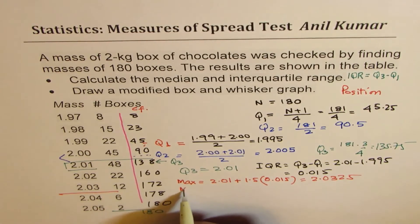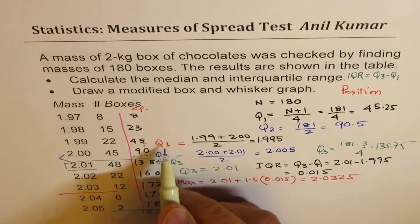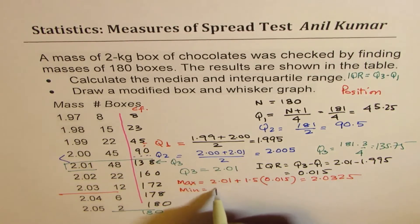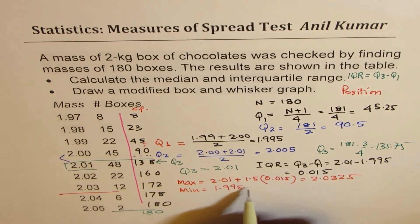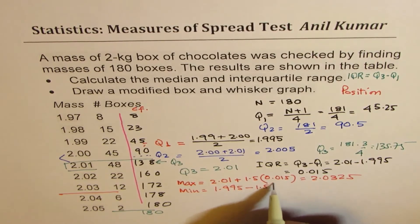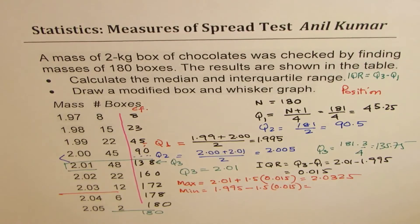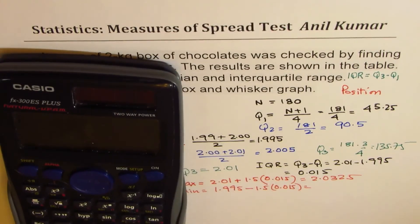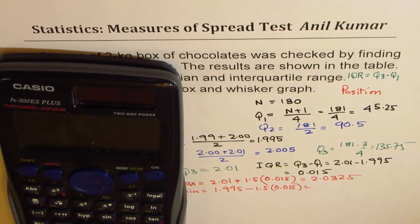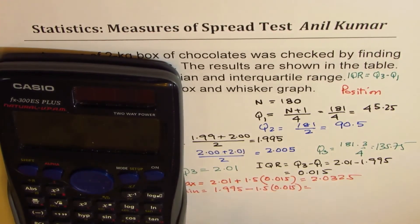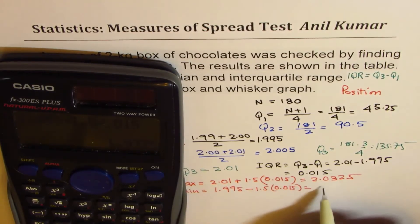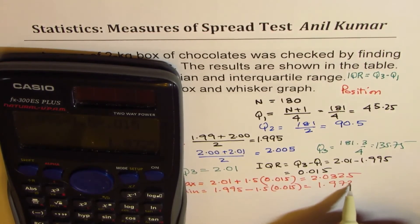So the minimum side will be Q1, which is 1.995, take away 1.5 times 0.015. So let's calculate this also. We have 1.995 take away 1.5 times 0.015. In decimals it is 1.9725.